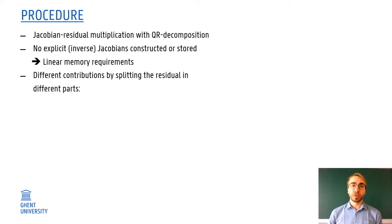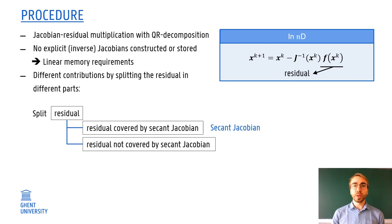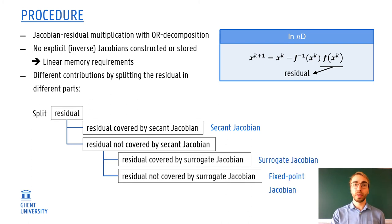How is this then achieved in practice? These different contributions from the different Jacobians. Well, this is done by splitting the residual. What's the residual? That's this f of x, which we saw before in this n-dimensional formulation. This residual is first split in two parts: the residual covered by the secant Jacobian, which is low rank, so it only covers part of the residual. And then there is another part which is not covered by the secant Jacobian. And that part is split again in two parts: one part which is covered by a surrogate Jacobian, and a part which is not covered by the surrogate Jacobian. For the part covered by the surrogate Jacobian, we of course use that Jacobian, and for the other part we have to use the fixed point Jacobian.